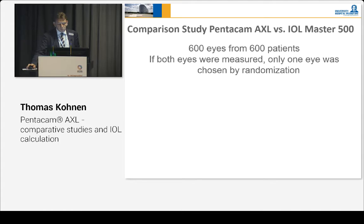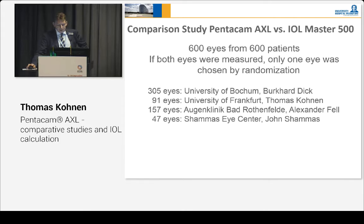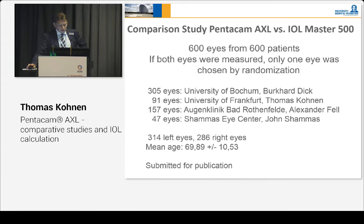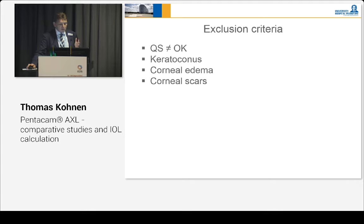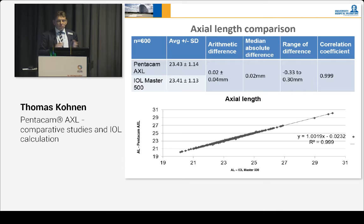There is now another study of 600 eyes from 600 patients. If both eyes were measured, only one eye was chosen by randomization for the study. There were four centers — you can see them here from Germany and from the U.S. The left and right eye distribution, mean age, are shown here, and this has been submitted for publication. Exclusion criteria again required good measurements; keratoconus, corneal edema, corneal scars, and previous eye surgery were excluded. Looking through the next slides, axial length measurement shows a very good comparison.